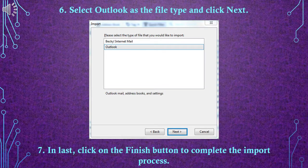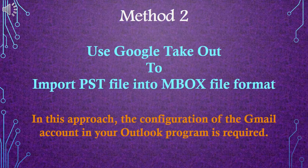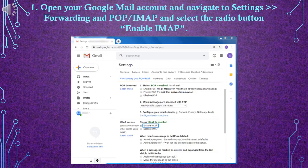Step 6: Select Outlook as the file type and click Next. Step 7: Finally, click on the Finish button to complete the import process. Method 2: Use Google Takeout to import PST files into mbox file format.